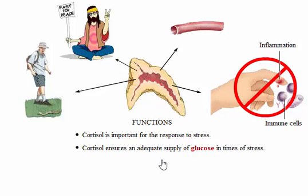Cortisol decreases glucose use in muscle and adipose tissue and spares glucose for the brain. In the absence of cortisol, a short fast can produce dangerously low plasma glucose levels and glycogen depletion from skeletal muscle and the liver. Cortisol also acts on blood vessels to enhance the effects of sympathetic vasoconstriction; without it, a moderate stress can produce hypotension.